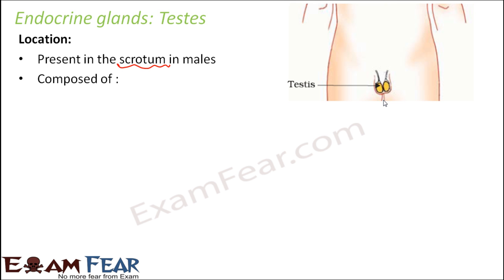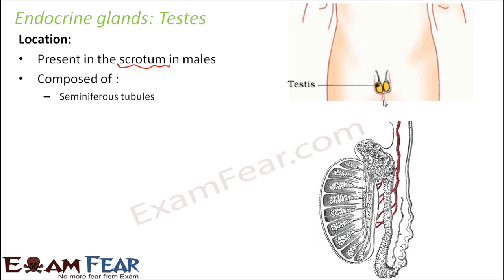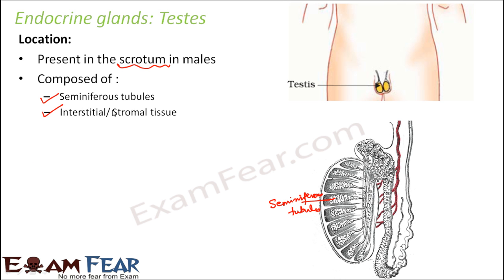If you look at its composition, the testes are composed of two main types of structures. One is the seminiferous tubules, which are tubular structures — you can see this is how the internal structure of the testes looks like. The other is the interstitial or stromal tissue. Stroma always refers to the covering, so the tubules are present towards the inner side and the interstitial tissue forms the outer areas.